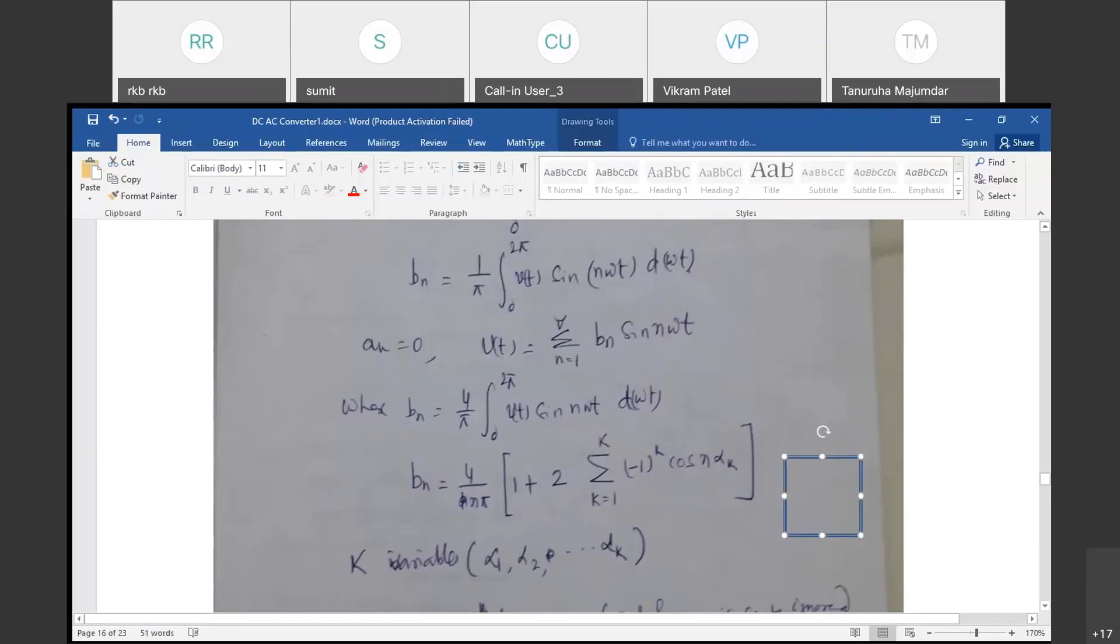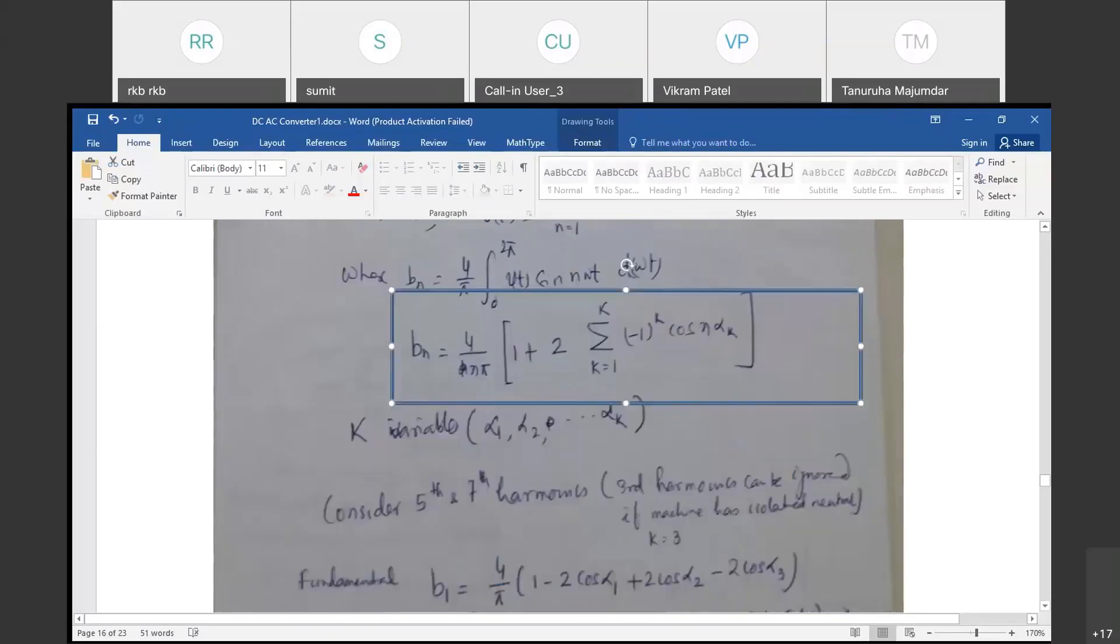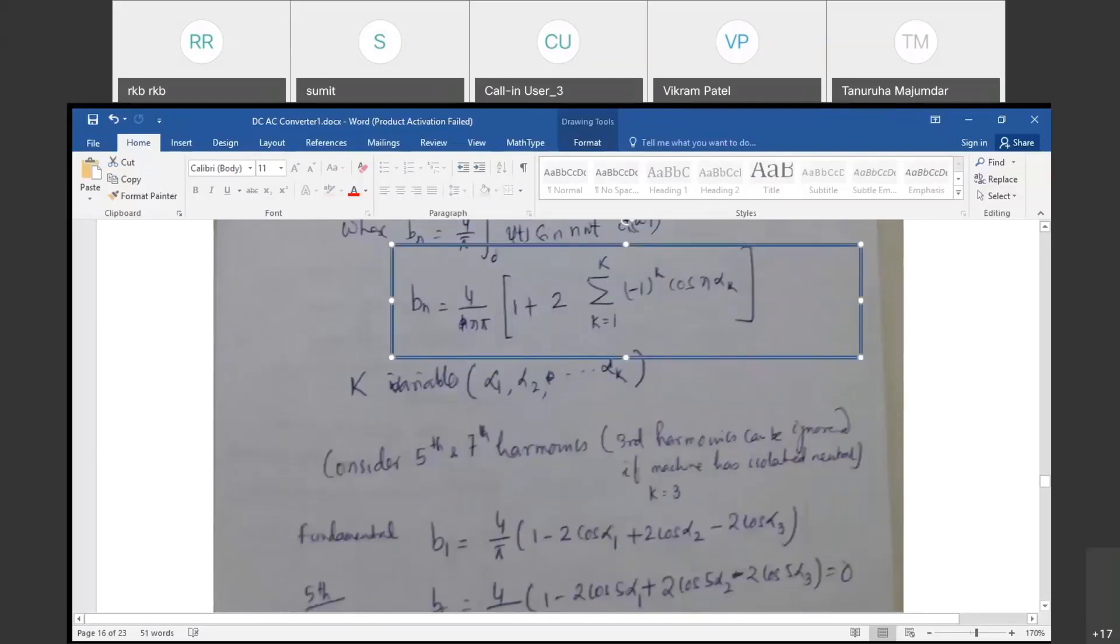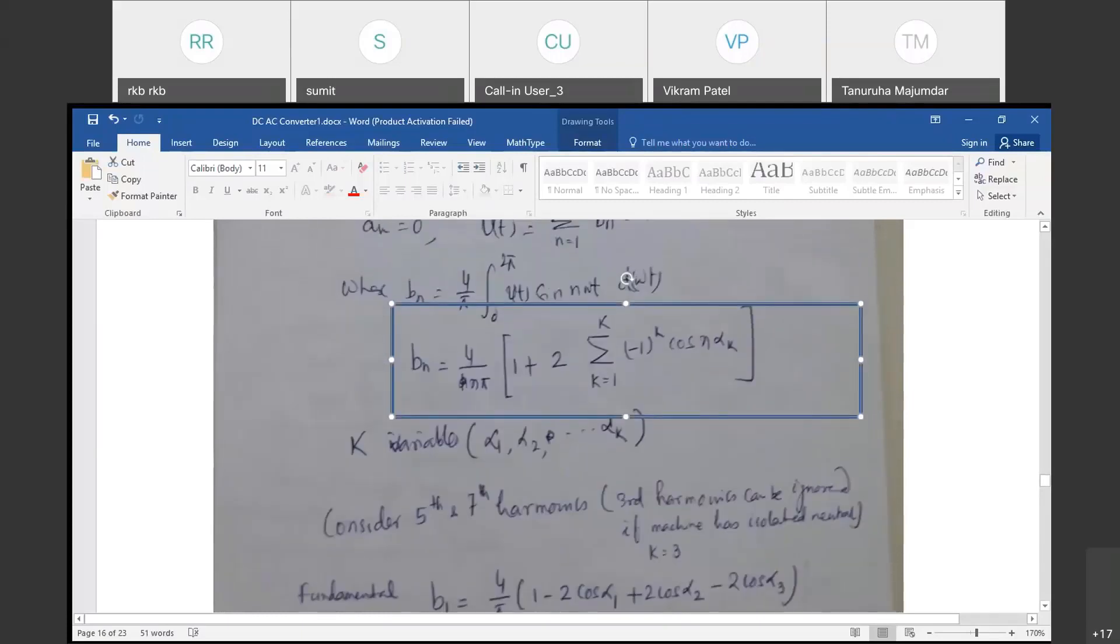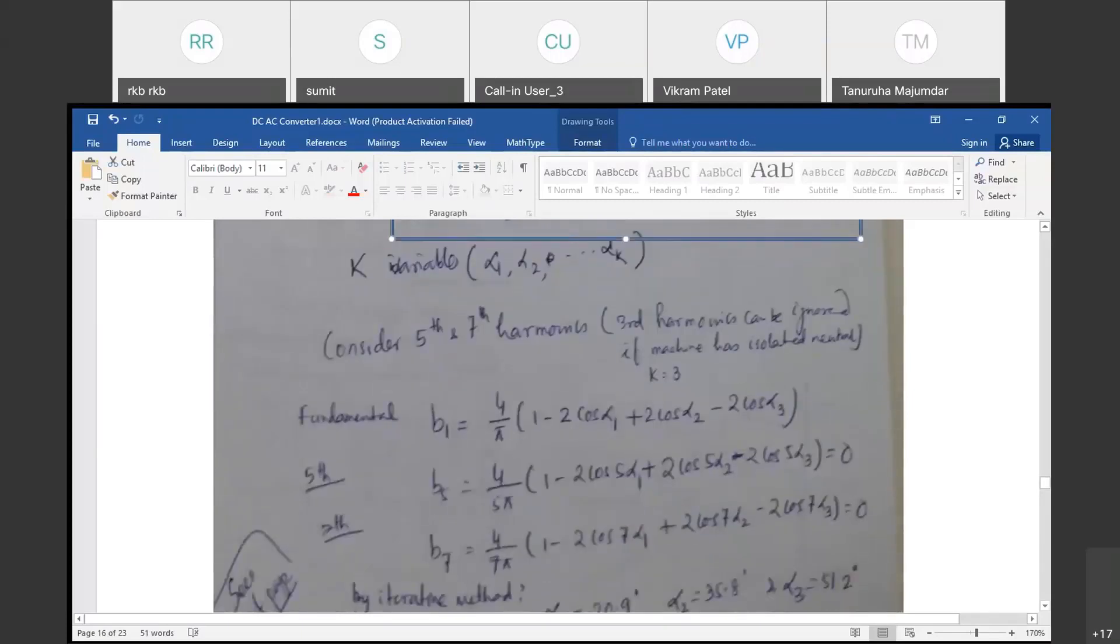This is our equation actually. In this equation, put N equals 5, N equals 7. When you put this one, you will get these three equations. B1, B5 and B7.